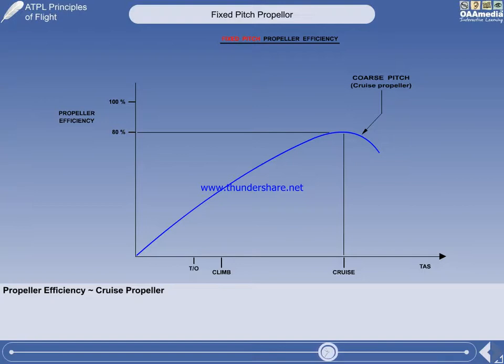It's a standard cruise propeller, the type fitted to the majority of small single-engine light aircraft. You can see that peak efficiency occurs at the cruise speed of the aircraft. It makes most sense to use a fixed-pitch cruise propeller, as most aircraft spend most of their flight time in the cruise.